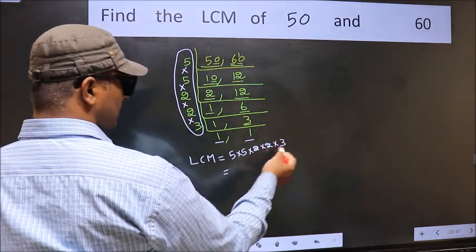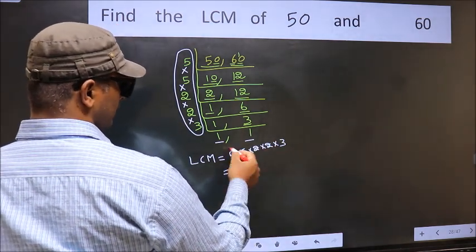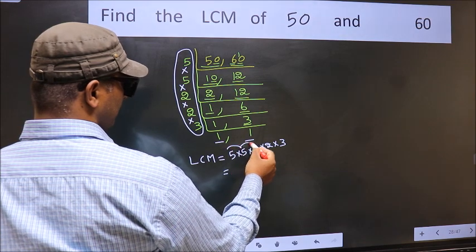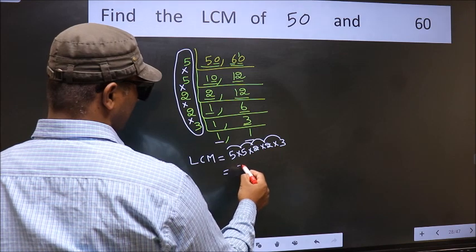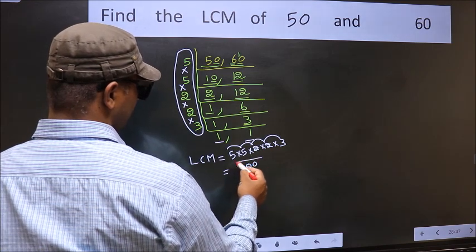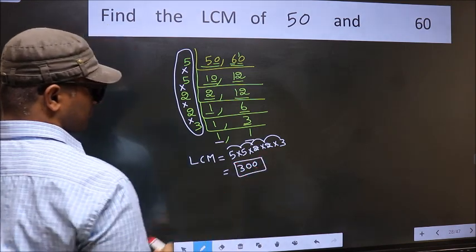Let us multiply these numbers. 5 into 5 is 25, into 2 is 50, into 2 is 100, into 3 is 300. 300 is our LCM. Now please stop here.